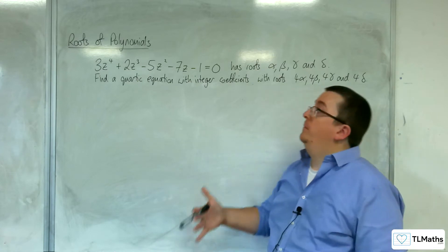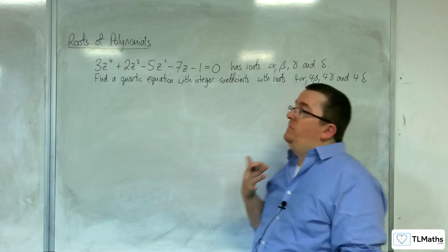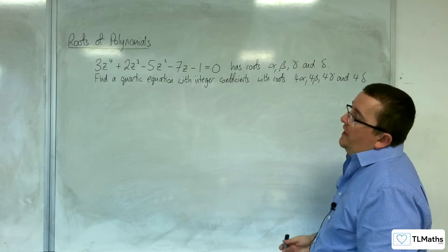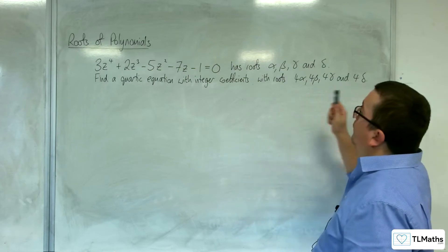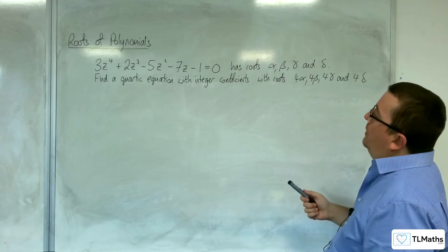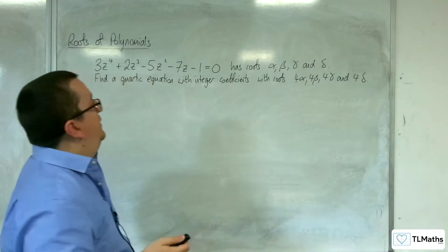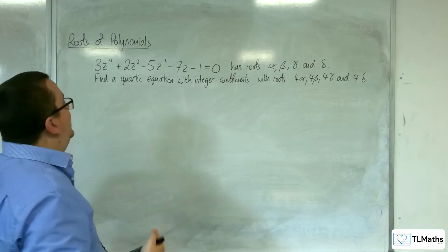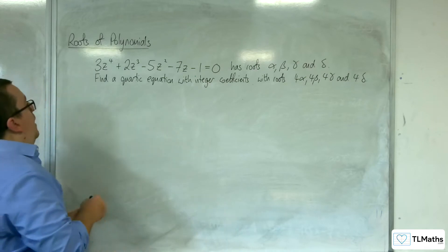We've looked at a similar problem to this for both quadratics and cubics. Now we have 3z⁴ + 2z³ - 5z² - 7z - 1 = 0, which has roots alpha, beta, gamma, and delta. Find a quartic equation with integer coefficients with roots 4 alpha, 4 beta, 4 gamma, and 4 delta. Just as we've done before, we need to get the coefficient of z⁴ to be 1.